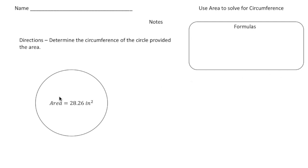Take a look at this first circle we have. We know that the area of the circle is 28.26 square inches, and we want to know what the circumference is. Remember, circumference is the distance around the circle. So we're provided the area, and now we want to know the circumference. In order to do this, we need to use our two important formulas that you know about area and circumference.